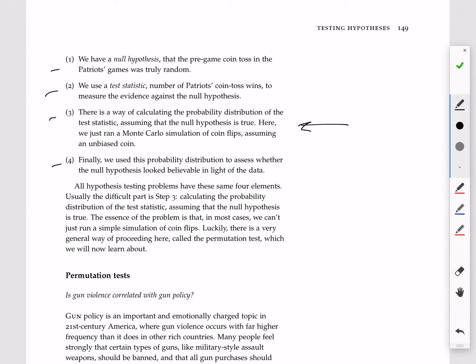And in most real data analysis applications, this step right here, step three, calculating the probability distribution of the test statistic under the null hypothesis, is far and away the most challenging part of this whole process. In this video, we're going to learn about the permutation test as a systematic way of doing this in most data analysis problems.